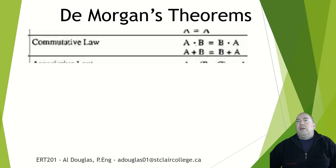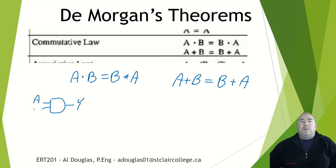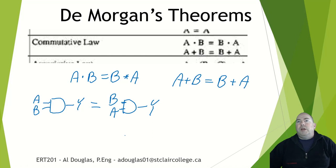The commutative law says that A AND B is the same as B AND A, or A OR B equals B OR A. In logic terms, it doesn't matter which order the inputs go in — either way the result is equal. That's what it's basically saying: the order of these doesn't matter, it's the same thing. That is the commutative law.